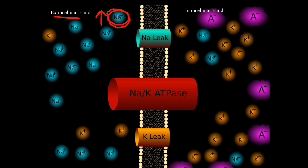Notice that we're moving three positive charges out but only two positive charges back in, which builds up a negative potential on the inside of the cell. However, the sodium-potassium ATPase only accounts for about negative 3 millivolts of potential.